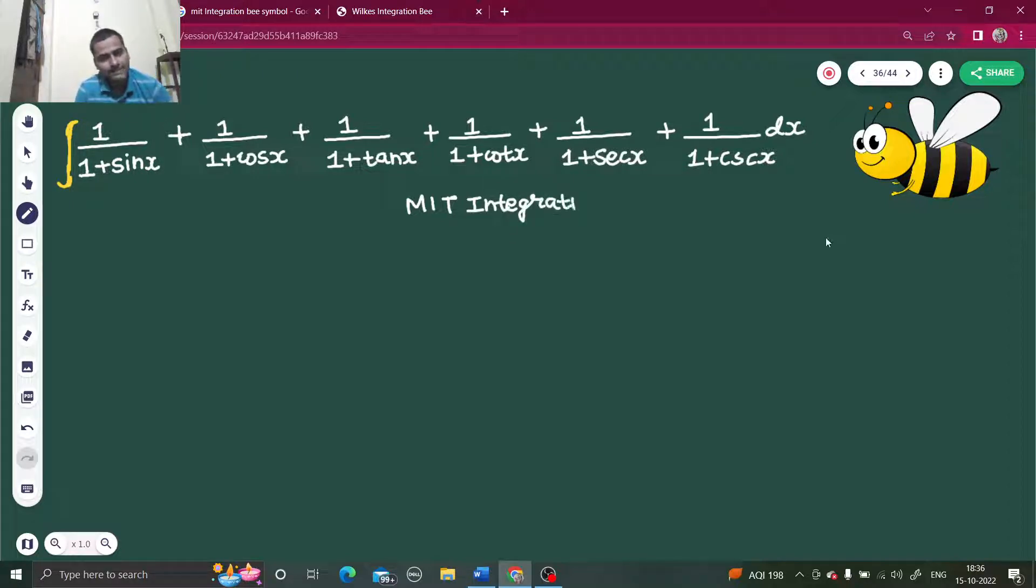It's a basic question involving trigonometric integration. You all know that tan x is sin x by cos x, cot x is cos x by sin x, secant x is 1 upon cos x, and cosecant x is 1 upon sin x.